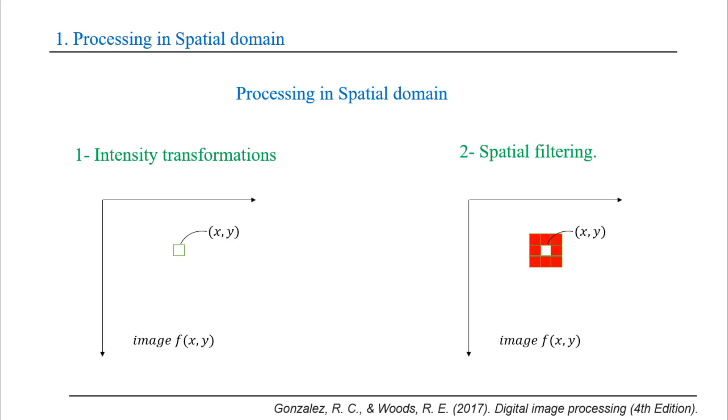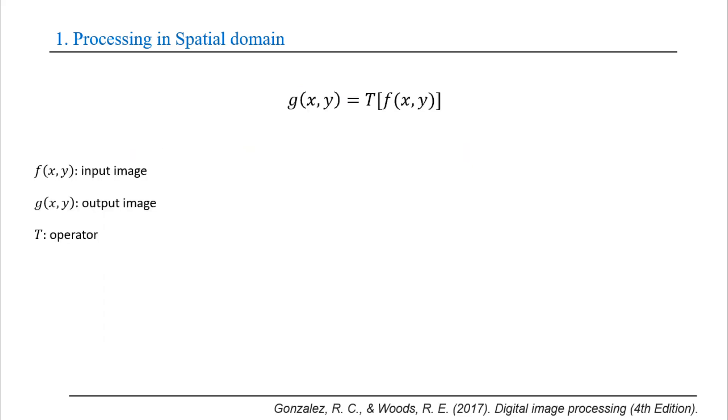We can describe spatial domain process by the equation g(x,y) equals T[f(x,y)], where f(x,y) is the input image, g(x,y) is the output image, and T is an operator of f defined over a neighborhood of point (x,y).